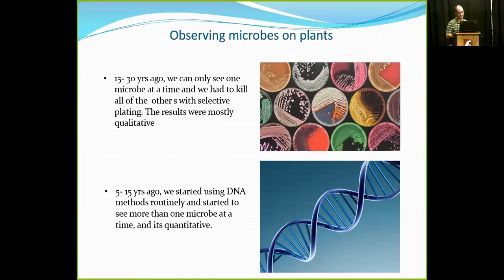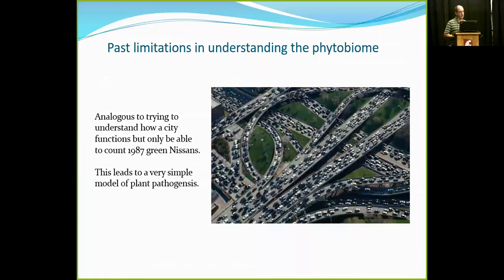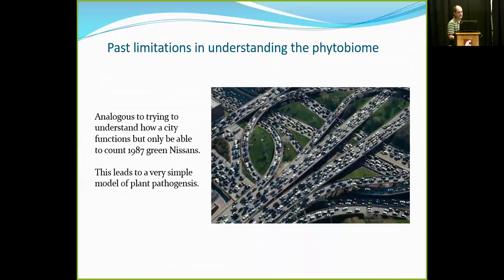When we can look at more than one organism at a time, we can start making bigger conclusions. But when you can only look at one or two things at a time, our understanding of the whole phytobiome is very limited. A plant is really just a big structure with a whole bunch of microbes in it, where the microbes outnumber the plant cells. You can think of it as a city with a bunch of cars — if you can only see the green '87 Nissans, you can't see the other 10 million cars out there. In plant pathology, we often don't see most of this until the damage has already happened.